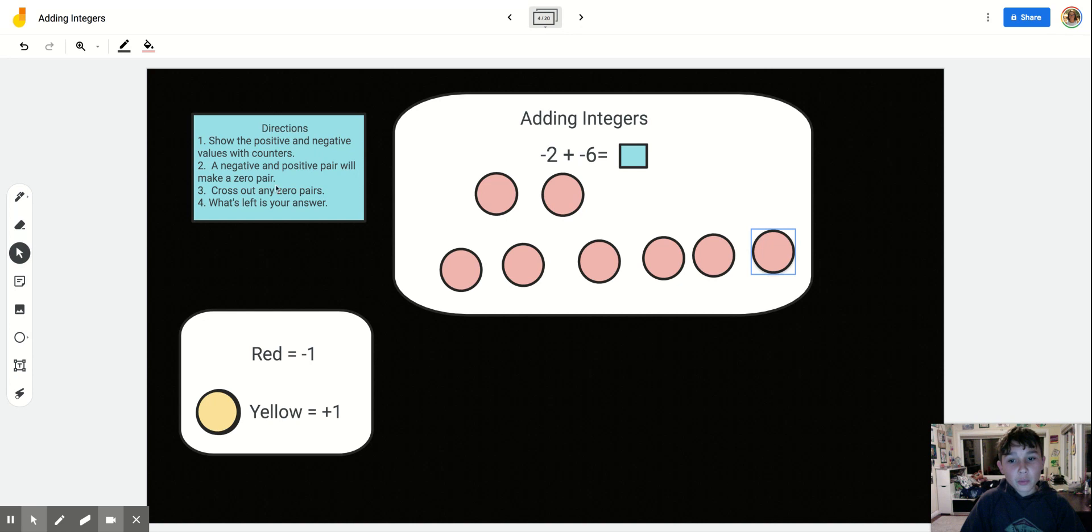If we add these two together, 2 plus 6 equals 8. But this is negative, so it would be negative 8. So we remember to put a minus and then an 8, that way your teacher or student knows that it's negative 8.